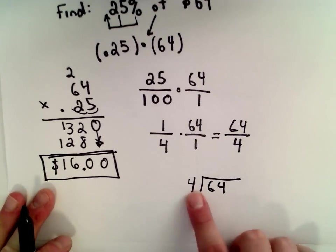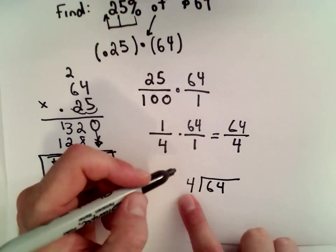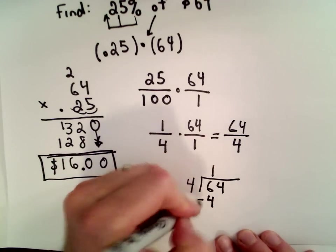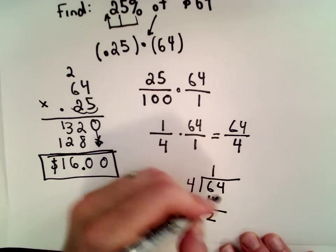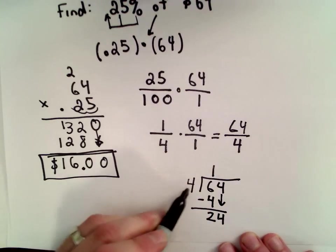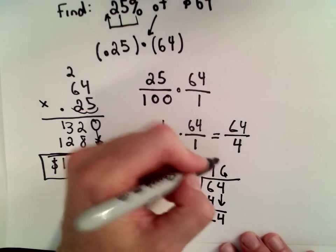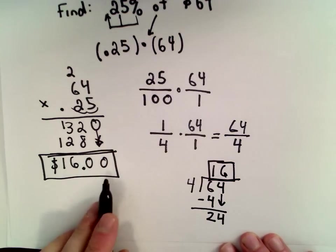So, 64 divided by 4. Well, 4 will go into 6 one time. 1 times 4 is 4. We subtract, we get a 2. We drop down our 4. And, 4 will go into 24 six times. So, it says 64 divided by 4 is 16, which is the same value we got over here.